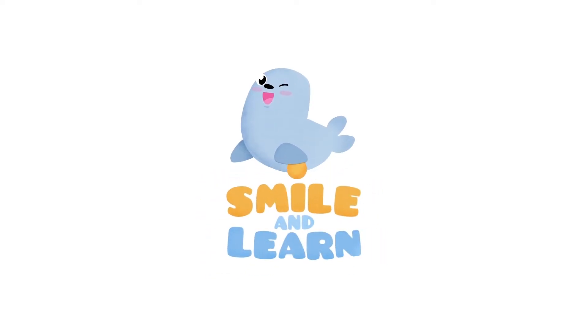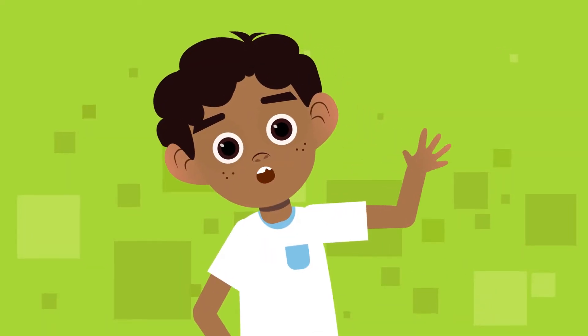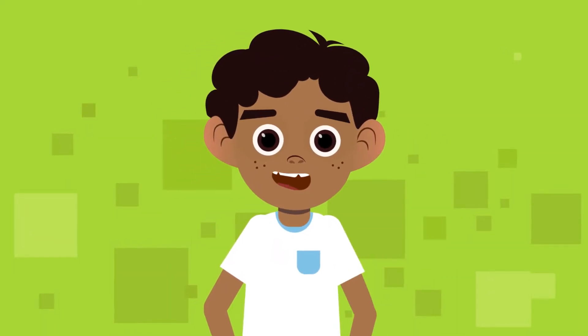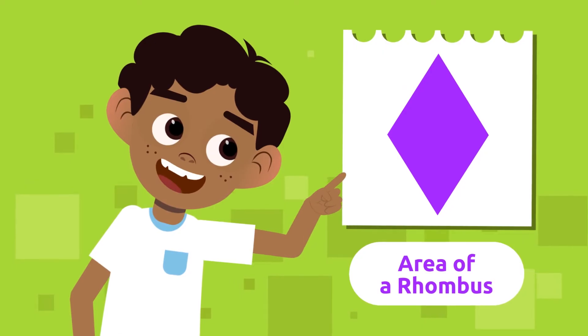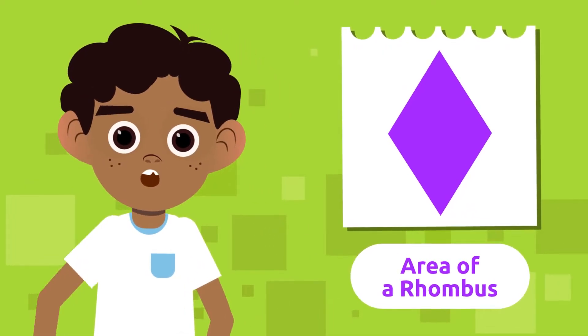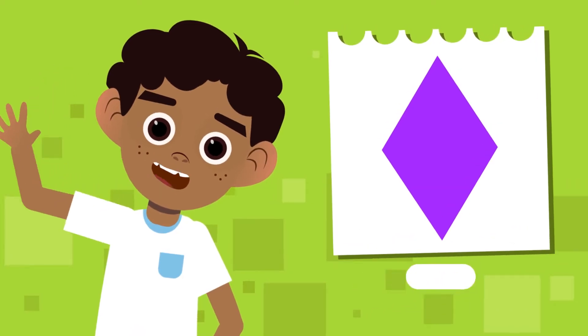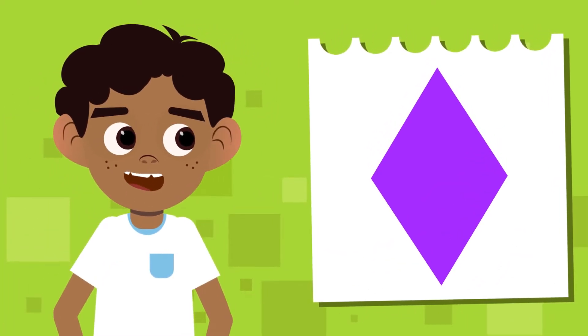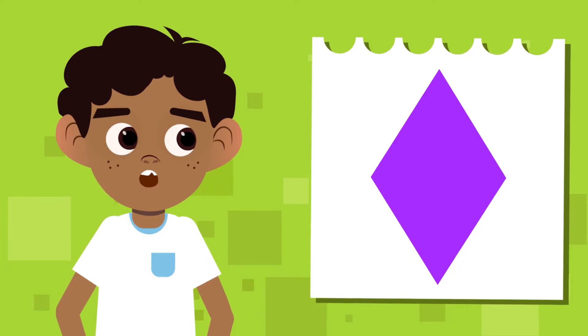Smile and Learn. Hey friends, today we're going to show you how to calculate the area of a rhombus, also called the surface of a rhombus. Let's start by remembering what a rhombus is. A rhombus is a parallelogram with four equal sides.